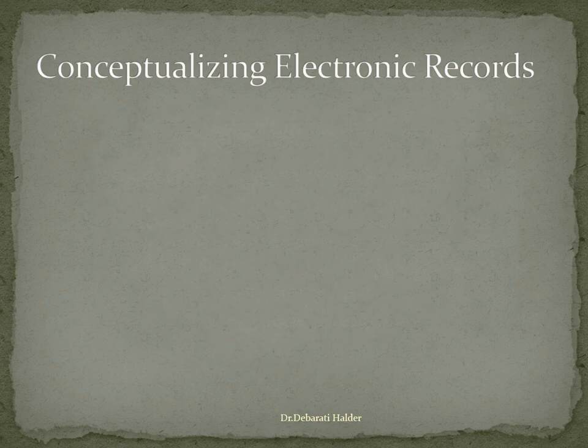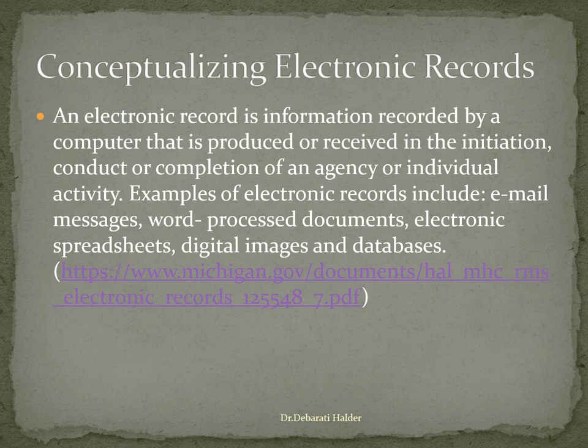First, let us understand about electronic records. The common understanding says an electronic record is information recorded by a computer that is produced or received in the initiation, conduct or completion of an agency or individual activity. Examples of electronic records include email messages, word-processed documents, electronic spreadsheets, digital images and databases.